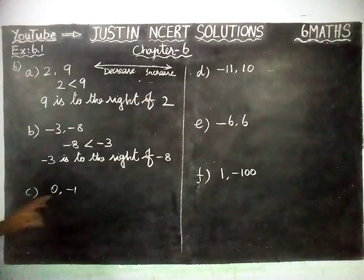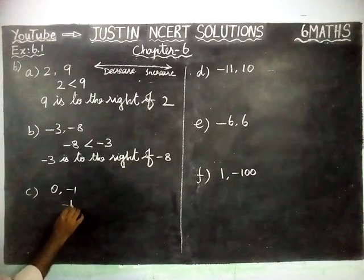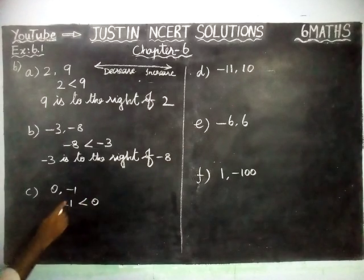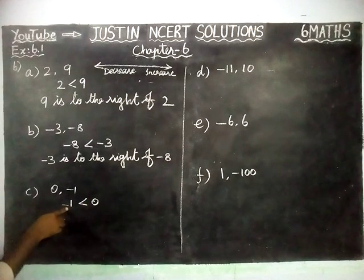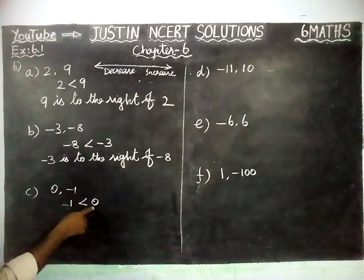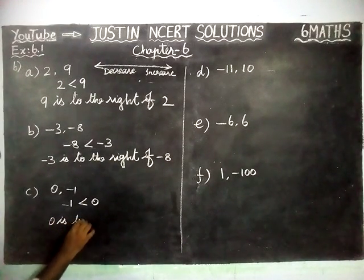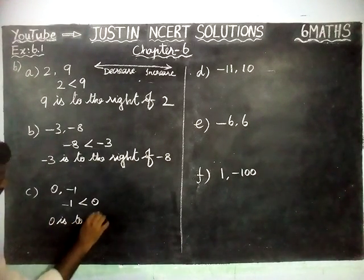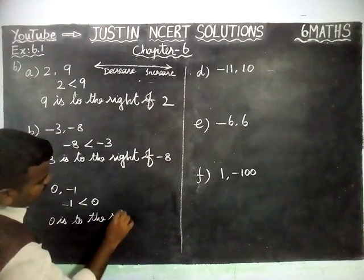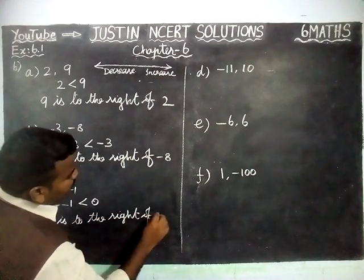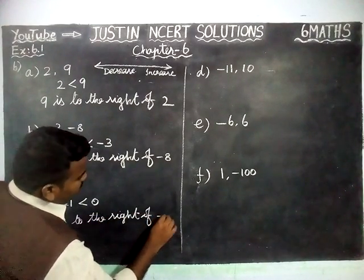Next, comparing minus 1 and 0: minus 1 is less than 0. Minus 1 is the smallest number, so 0 will come on the right hand side. Therefore, 0 is to the right of minus 1.